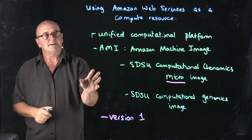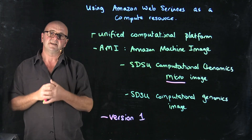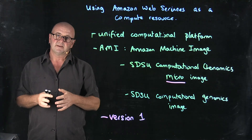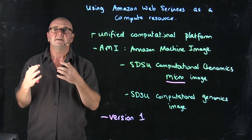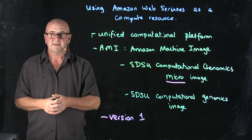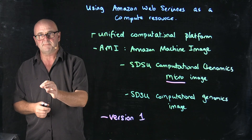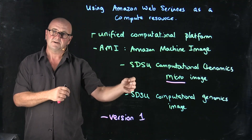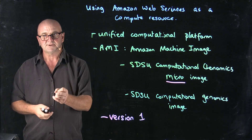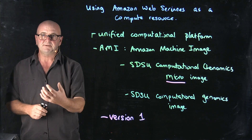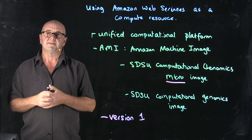There are a lot of benefits to using Amazon, particularly this unified computational platform. It means that everybody has the same system — whether you're running Mac, Linux, Windows 7, Windows XP, or Windows 10 — you all have access to the same computer with the same programs installed the same way, so I can show you the commands and they should run correctly. The downside is the potential cost, but we're going to use an educational allotment from Amazon Web Services to run through this class.